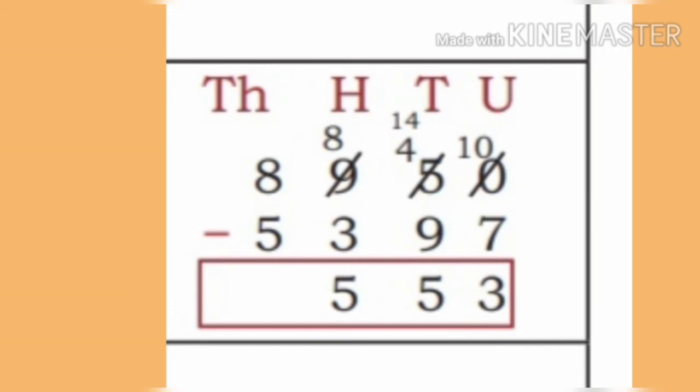It is not possible to subtract 3 from 8 in the hundreds place. Now in the hundreds place of the minuend, on subtracting 3 from 8, 5 hundreds remain.